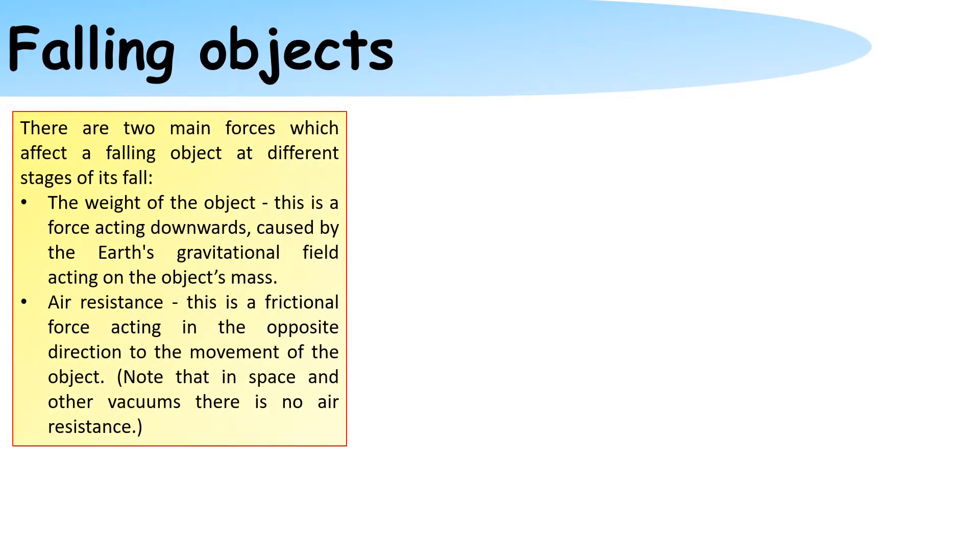There are two main forces that affect falling objects when falling from high heights. Remember that this can also be referred to as reaching terminal velocity. The two things that will affect it are the weight of an object, that is the force acting downwards caused by the Earth's gravitational field, and air resistance, this is the frictional force acting in the opposite direction.